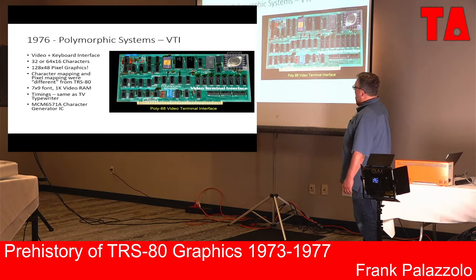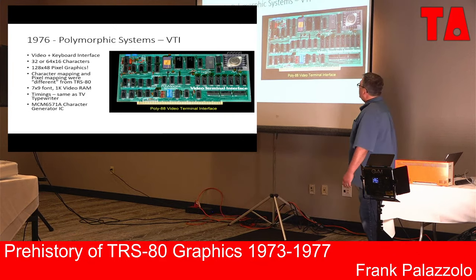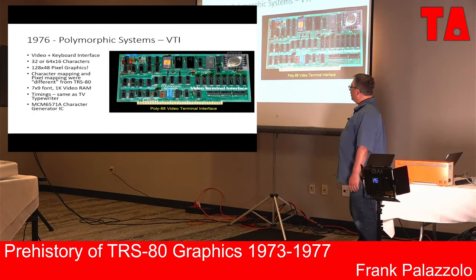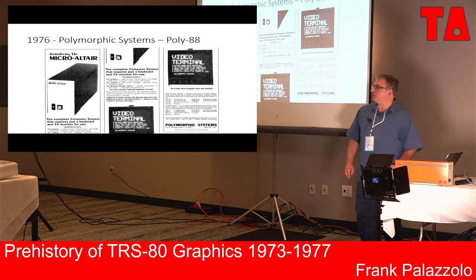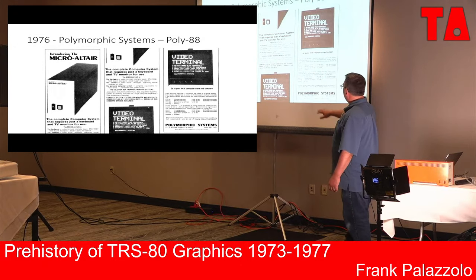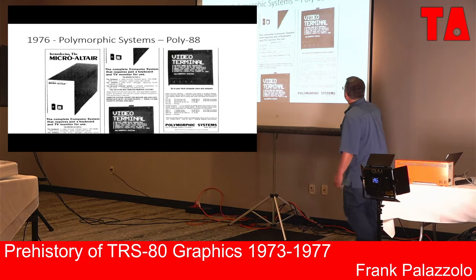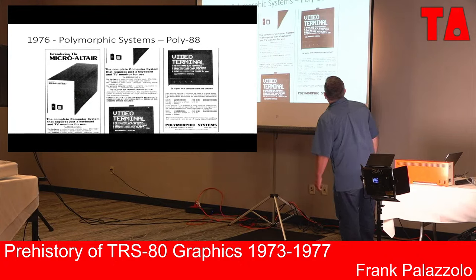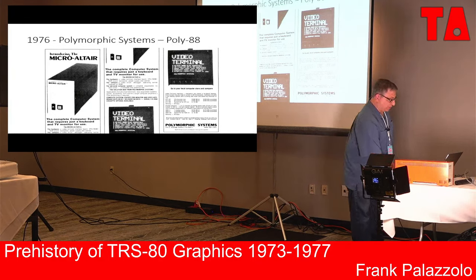Similar to the TRS-80's graphics, but not the same. The pixel mapping and pixel sense were very different from the TRS-80. It still had the nice 7 by 9 font, 1K video RAM, and the same timings as the TV Typewriter, using a different version of that same family of character generator ICs. Looking at the ad — still branded 'Micro Altair' at that point — they're using a combination of 32 characters across and pixel graphics. It can be yours for $185 as a kit or $260 assembled, much cheaper than a teletype.